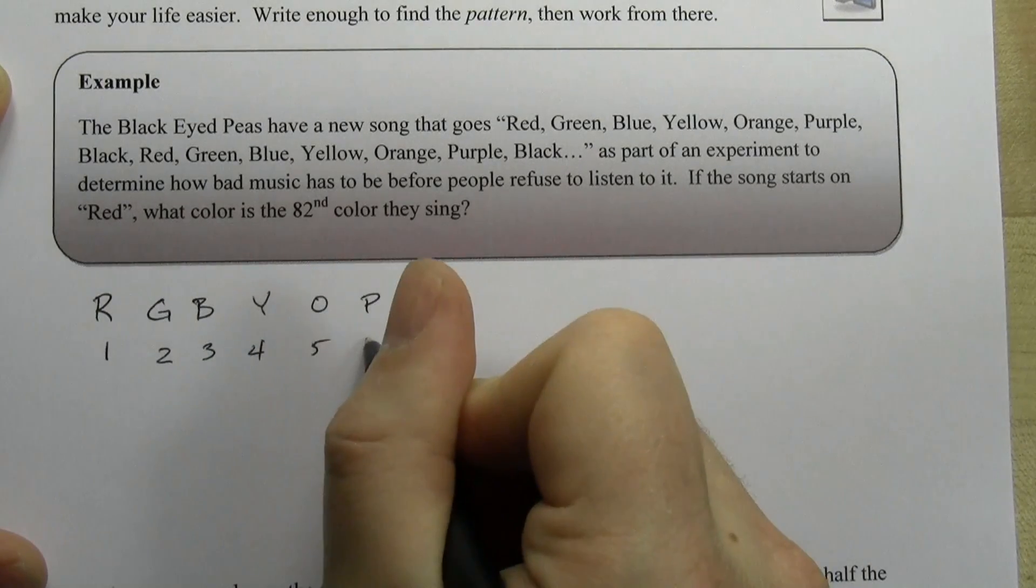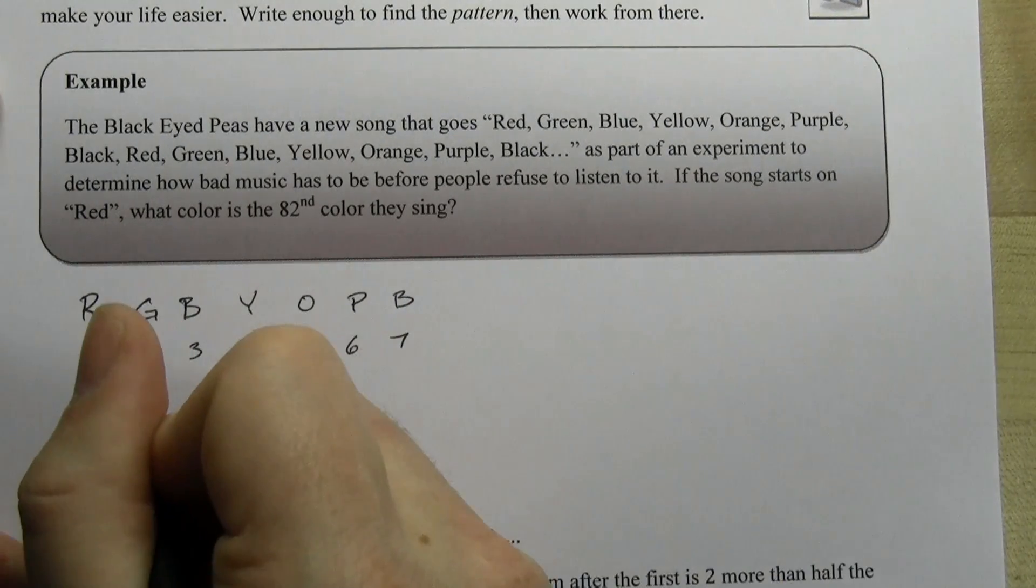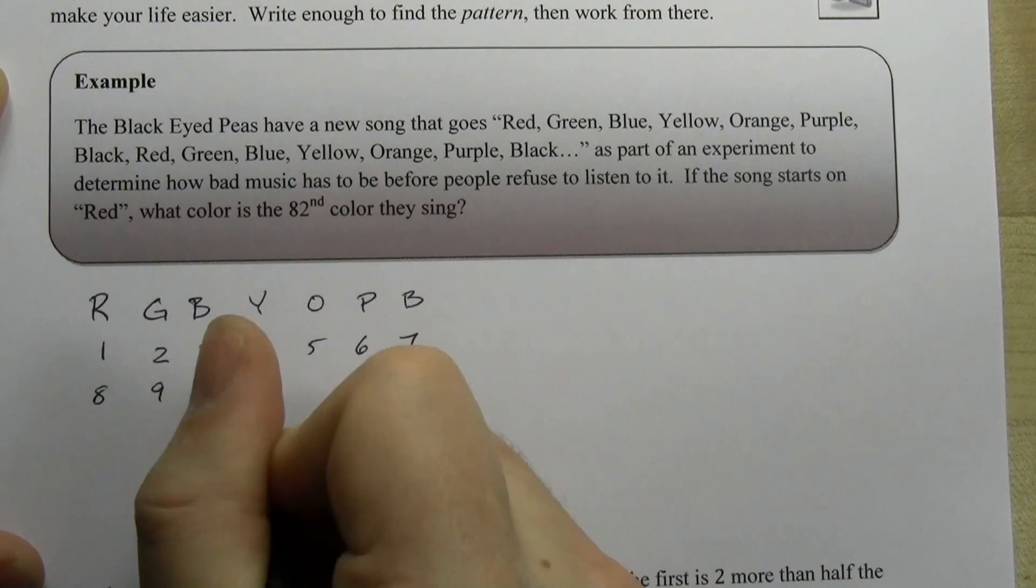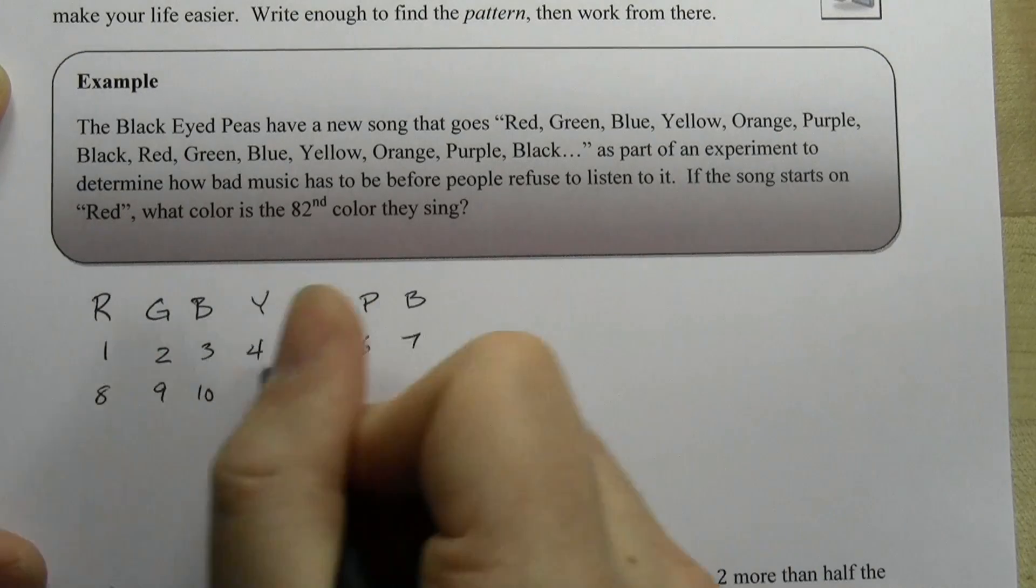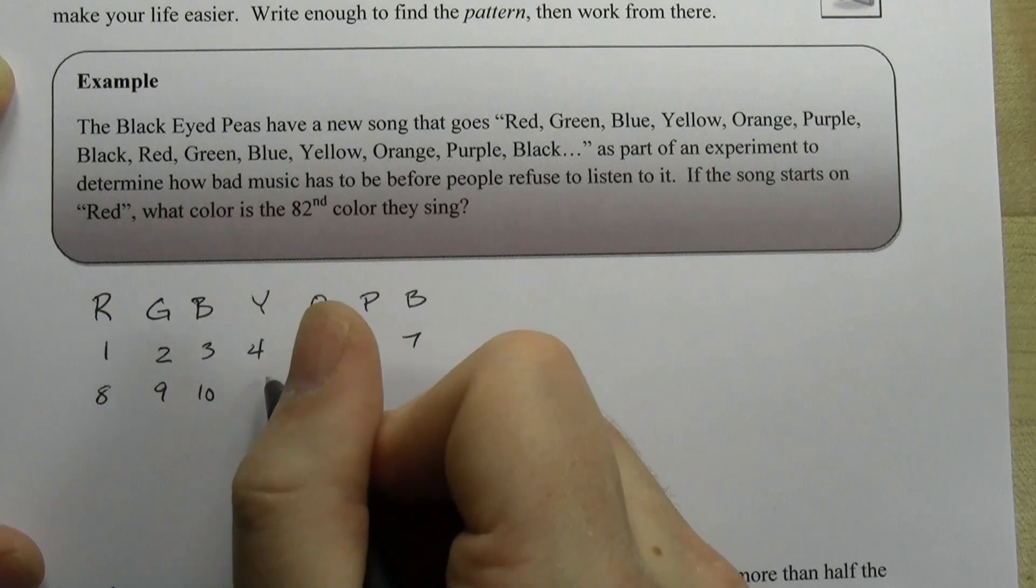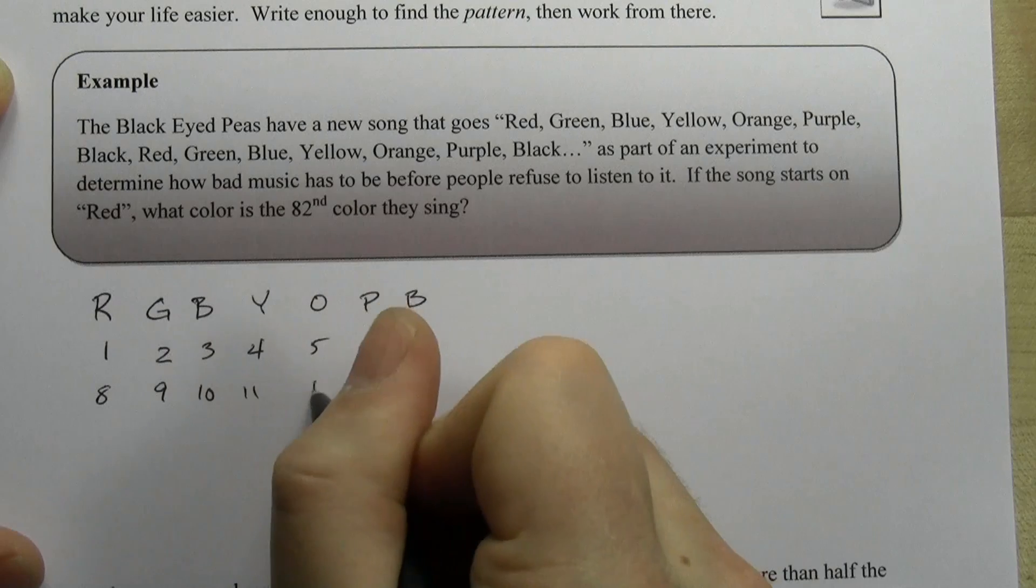I like to call this the calendar method and you'll see why. It starts to look like a calendar, right? The days of the week are the colors and the color that they're on is numbered right here.